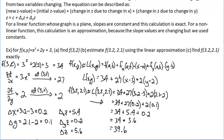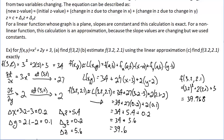Finally, let's compare with the exact value. f of (3.2, 2.1) equals 3.2 cubed plus 2 times 2.1 plus 3, which works out to 39.968. Our approximation was 39.6 — that's reasonable, not perfect, but a reasonable approximation.